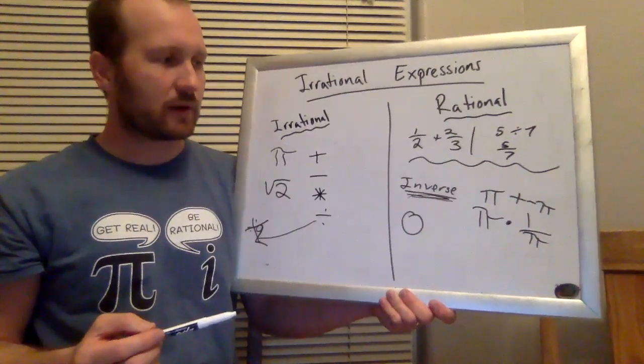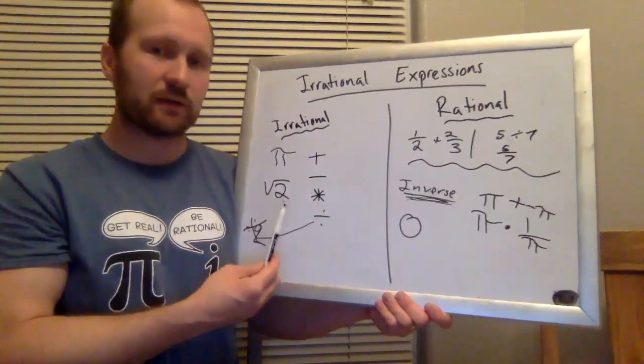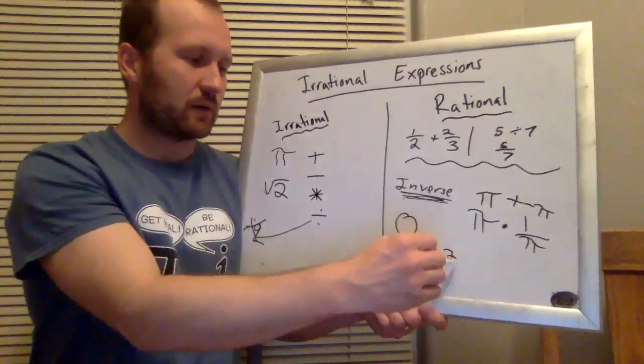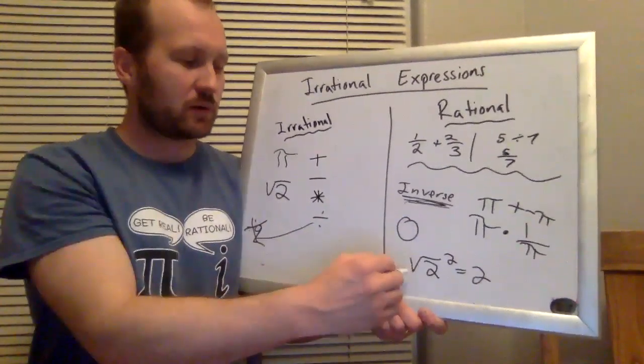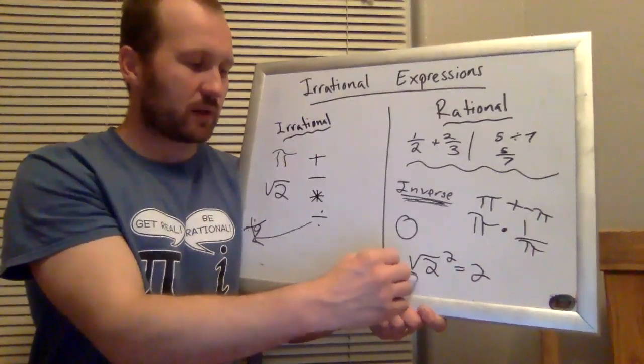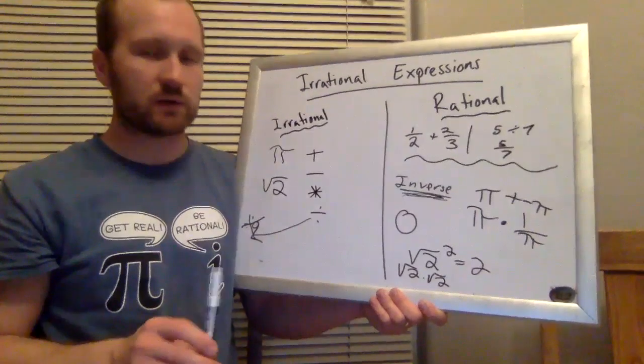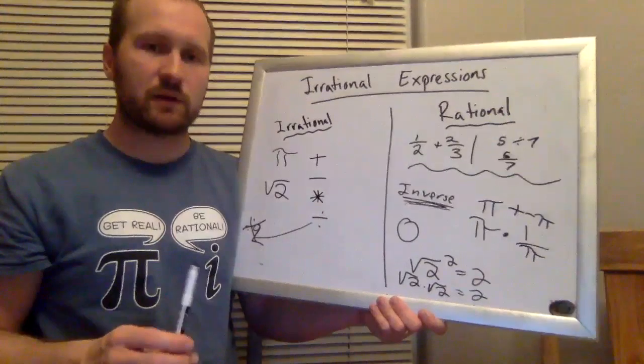Another thing that can happen, especially with square roots, is like another type of inverse. If I square a square root, I can turn that into a rational number. And squaring means multiplying times itself. So the square root of two times the square root of two is going to be two, or the square root of two squared is going to be two.